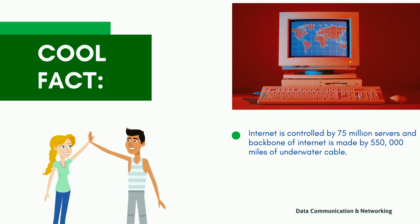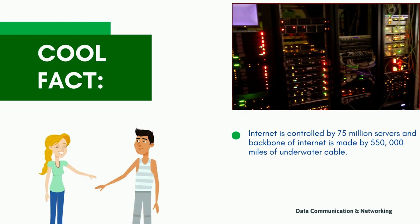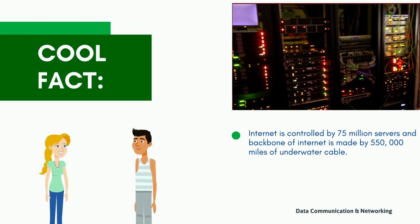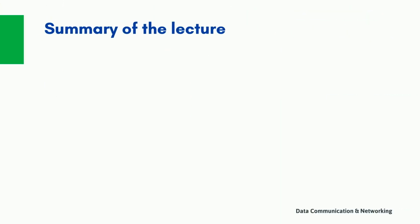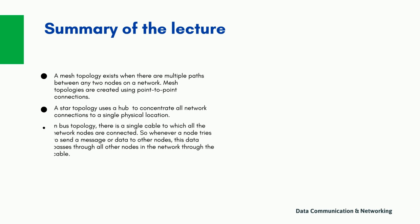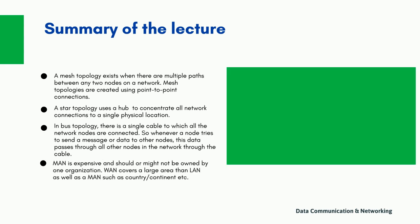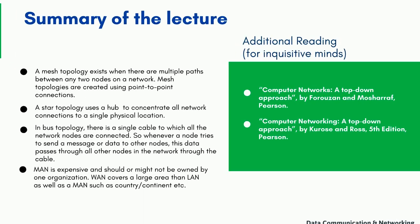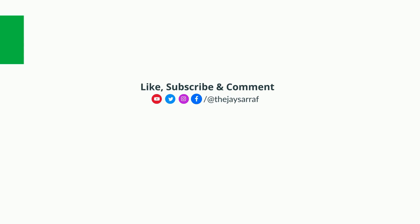Here is the cool fact about today's lecture: the internet is controlled by 75 million servers and the backbone of the internet is made by almost five and a half lakh miles of underwater cable. Friends, I hope I was able to help you grasp the objectives of today's lecture. Please go through the summary of today's lecture and you may also like to follow the reference book provided to go through the content in detail. Thank you.